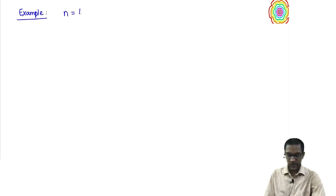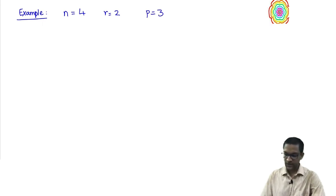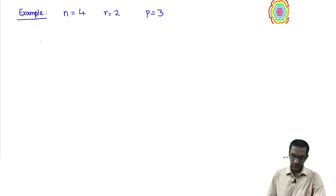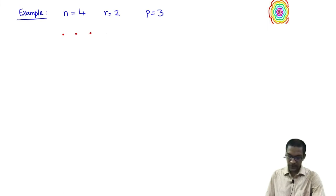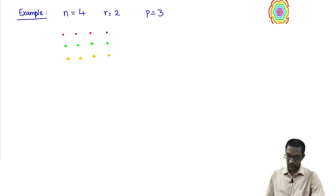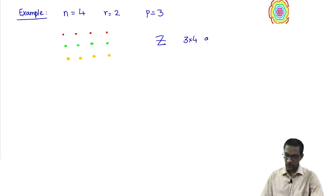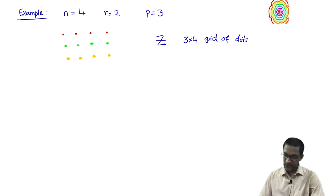Let me draw my set Z: it is all points in a 4-cross-3 grid of dots — 4 columns and 3 rows — so a 3-cross-4 grid of dots. Z has exactly pn = 12 dots. The set X should have cardinality pn choose pr, which in this case is 12 choose 6 — the number of ways of choosing 6 dots out of these 12 dots. I colored them with 3 colors just to indicate the 3 rows.